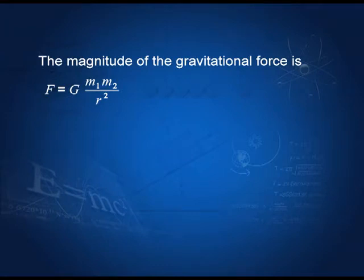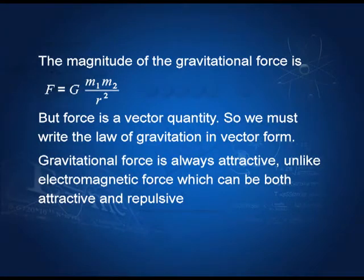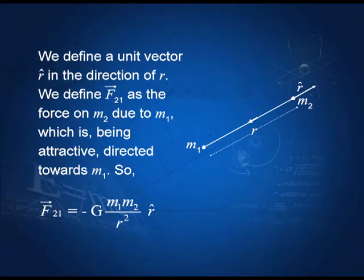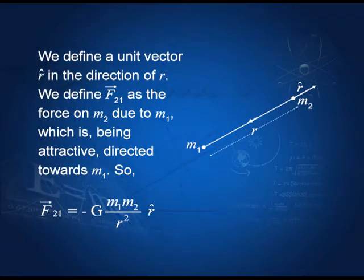The magnitude of the gravitational force between two particles of mass m₁ and m₂ is G·m₁·m₂/r². This is the magnitude of the force, but since force is a vector quantity, we must express the law of gravitation in its vector form. Taking the two masses m₁ and m₂ with distance r between them, and r-hat as a unit vector in the direction of r: when m₁ attracts m₂, the force on m₂ due to m₁, called F₂₁, has magnitude G·m₁·m₂/r² and its direction is opposite to the unit vector r-hat, so we put a minus sign before r-hat.